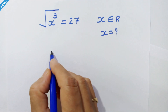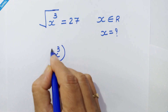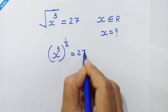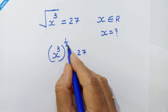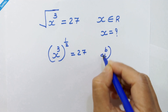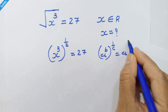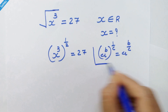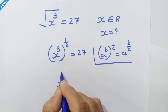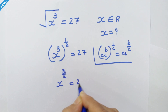We can rewrite this equation like x cube whole raised to 1 upon 2 is equal to 27. Now we can multiply the exponents because the rule says if we have a raised to b whole raised to 1 upon c, then it can be a raised to b upon c. So here we can write x raised to 3 upon 2 is equal to 27.